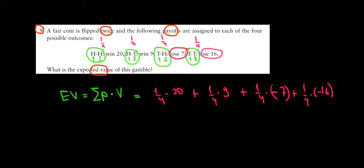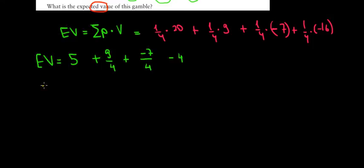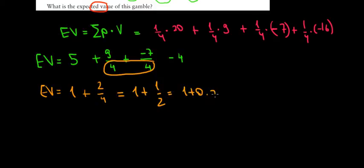Well let's do the math now see what we get. So the expected value would equal 1 over 4 times 20, that's 20 divided by 4 which is 5, plus 9 divided by 4, plus minus 7 divided by 4, plus minus 16 divided by 4. And that's just equal to 1 plus 1 over 2, which is the same as 1 plus 0.5, and that's equal to 1.5. And that's it, we are done.